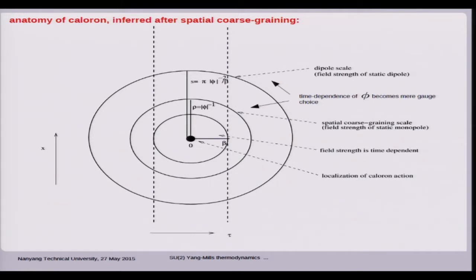Having said all this, we can have a re-evaluation of the caloron anatomy, as I already superficially introduced it before. There is a region, a space-time region around the origin, where the field strength is time-dependent. Spatial averaging over this region up to the cutoff scale renders the time-dependence of the field strength into a time-dependence of the effective field phi, which is merely a pure gauge. Then there is an external peripheral region in space, where there's dipole behavior of the field strength, which is static. Action is localized in this point. Action was supposed to be h-bar as we just learned.